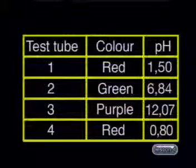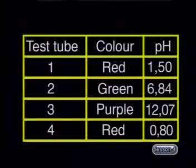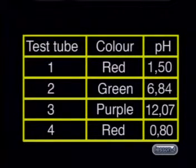Now I have completed the chart. Check your answers with me. Test tube 2 is 6.84, test tube 3 is 12.07, and test tube 4 is 0.80. This confirms that test tube 2 contains a neutral solution, test tube 3 is basic, and test tube 4 is acidic. Don't worry if your results aren't exactly the same — as long as they're close to these values, you're okay.